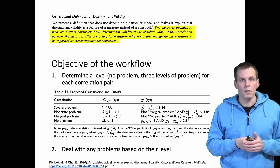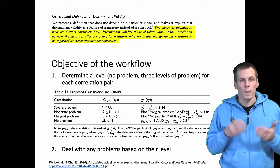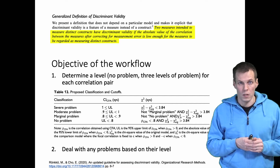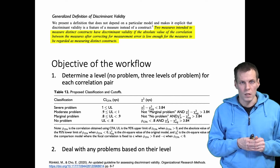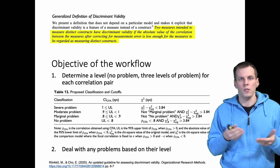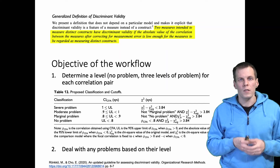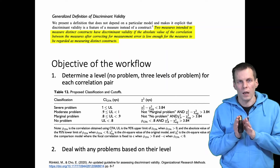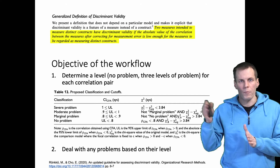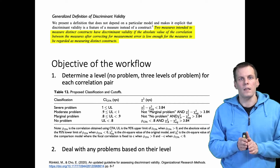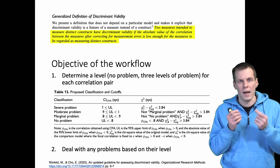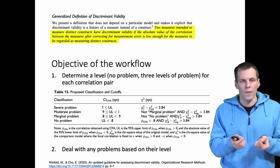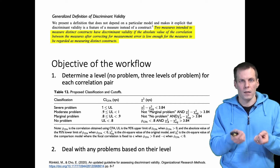Each of these levels also implies different consequences for the research and different actions for the researcher. So discriminant validity is not something you declare that you have and then proceed — it is something that you assess the degree of and then act on based on those assessments.